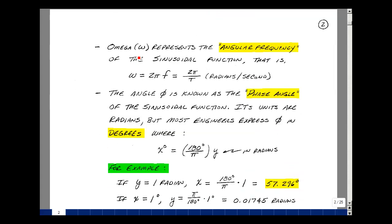In our cosine function, there was a term omega, and that represents what's called angular frequency. It's related to our frequency in Hertz by 2 pi, and also related to the period as 2 pi over the period, and the units are radians per second. The angle phi in our cosine function is referred to as the phase angle. It has units of radians, but most engineers use degrees. You can convert from radians to degrees with this formula, that the angle in degrees is equal to the angle in radians times 180 degrees over pi.